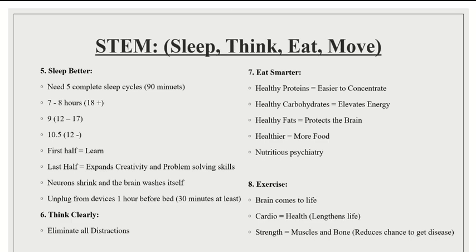It's really important to get enough sleep because it protects and develops your brain. Unplug from devices one hour before bed, or at least 30 minutes. Number six is think clearly — eliminate all distractions like devices. Eat smarter: healthy proteins help you concentrate, healthy carbohydrates elevate energy levels, and healthy fats protect the brain since your brain is mostly made of fat. Eating healthier actually allows you to eat more food for the same calories. There's also a new field called nutritional psychiatry, where psychiatrists use diet to alleviate mental health stress and complications.